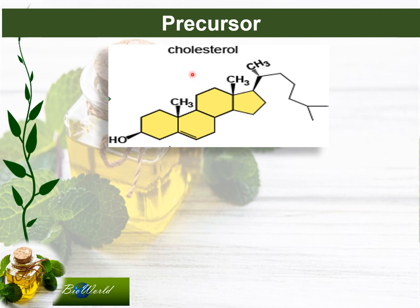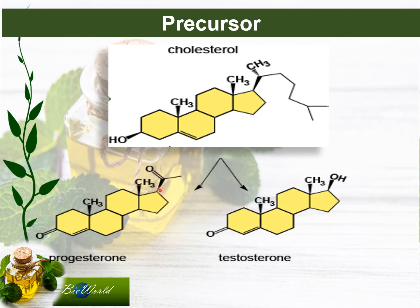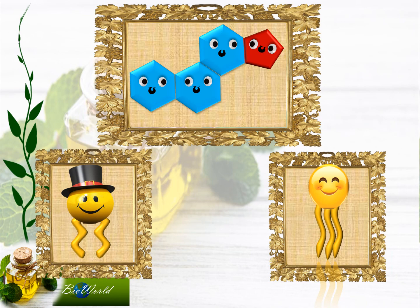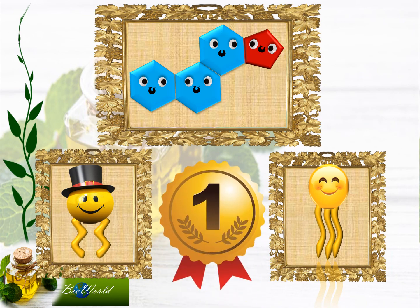Cholesterol can also be a precursor, just like how triglycerides were precursors of glycolipids. Cholesterol will use its 4-carbon ring to form other steroids such as progesterone and testosterone. This brings us to the end of our discussion on lipids. I hope you feel lipids deserve to be number one! Until I see you next time, bye bye from BioWorld.